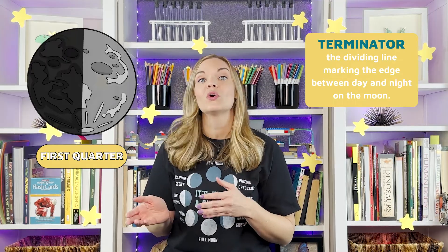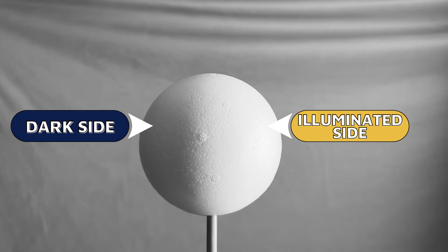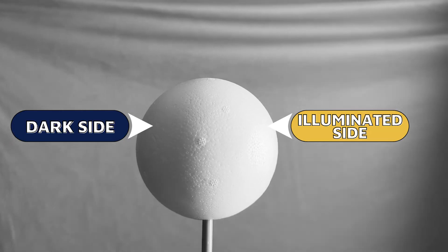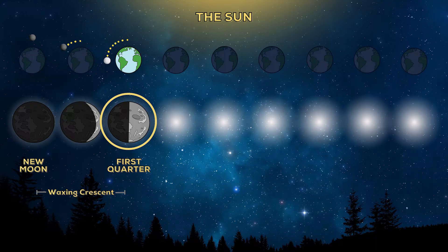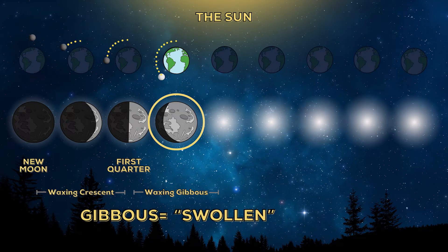The crescent Moon will grow a little more every night until it reaches the next phase: first quarter. It's now 90 degrees away from the Sun in the sky, which means we are staring directly at the Terminator — the Moon's day-night line. The Moon looks half illuminated, but it's called first quarter because the Moon is one quarter of the way through its cycle. As more days pass, the illuminated part of the Moon comes more into view, soon entering its next phase: the waxing gibbous. Gibbous means swollen or humped, and waxing because it looks to be growing every night until it reaches the full Moon.